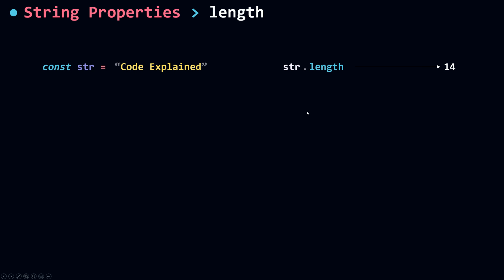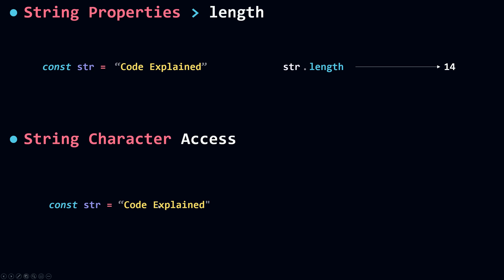Before we dive into the methods, let's discuss how to access a string character. Sometimes you want to access a specific character in your string. To do that, you use your string as if it were an array — you write the string name, then open square brackets, and inside put the index of the character you want to access. Strings are 0-index based, meaning the first character's index is 0.